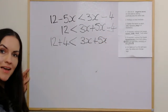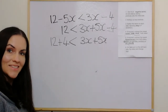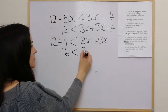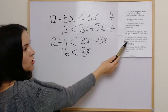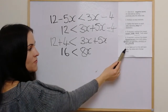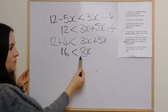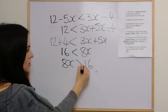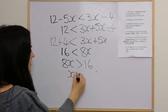We don't have any brackets to multiply out. Gathering like terms: 12 plus 4 is 16, is less than 3x plus 5x which is 8x. We're not required to subtract the lowest letter term or lowest numerical term. We need letters on one side and numbers on the other, which we already have. But the x term isn't on the left hand side, so we flip the sides and change the sign. So 8x is greater than 16, and dividing both sides by 8 gives x is greater than 2.